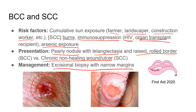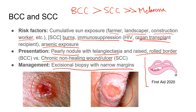Two high-yield concepts: in terms of incidence, BCC is by far the most common skin cancer, followed by SCC, then melanoma. Second, lesions on the upper lip are more often BCC, and lesions on the lower lip are more often SCC. People aren't quite sure why, but this is frequently tested. A mnemonic: it's a 'BS fact' — B on top, S on the bottom.